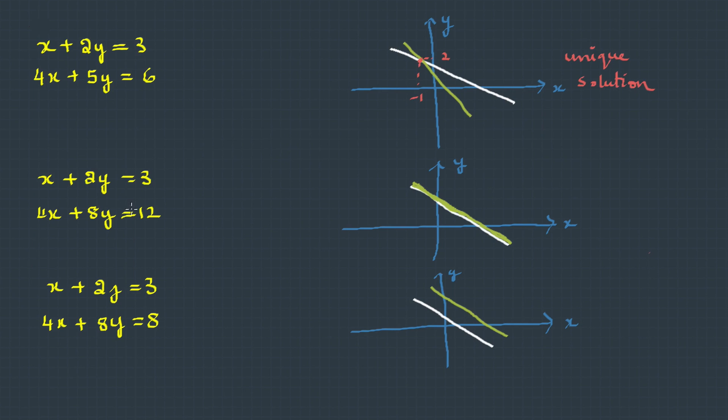Look at the second set of equations. These two lines are actually coinciding—any point on the first line also satisfies the second line. So the solution is every point on the line. Here we have infinite solutions.